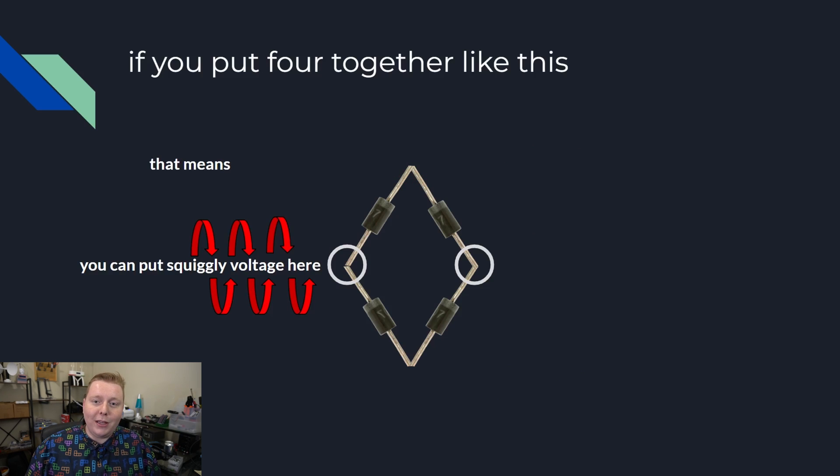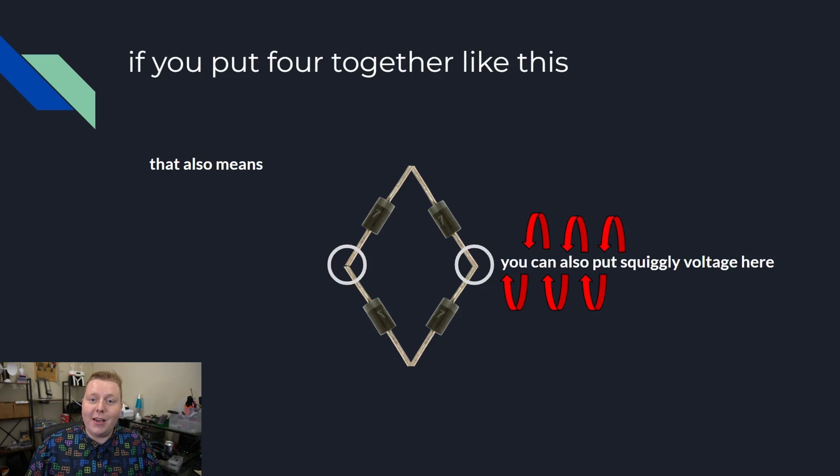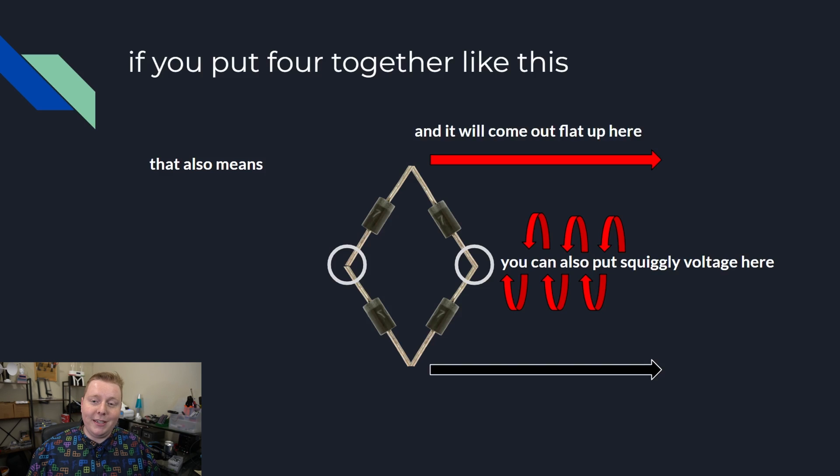You can put any voltage, any squiggly voltage or whatever on these two terminals and it will come out as DC on top. You can put it on the other side. You can have any combination of squiggly voltages on these two terminals and it will always come out as DC on the top and bottom.